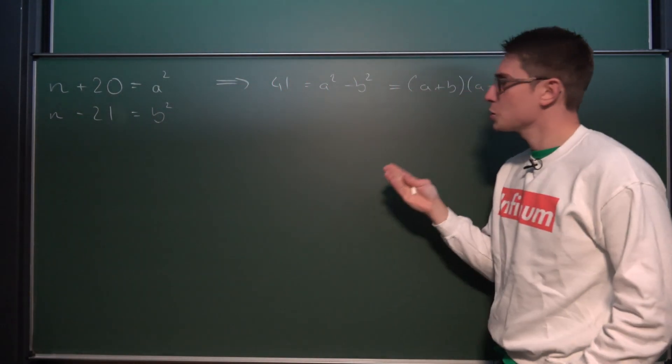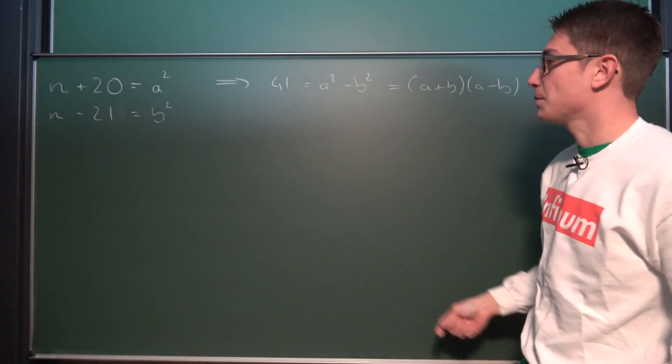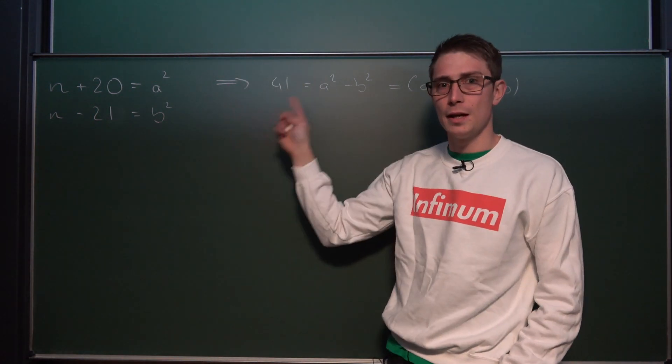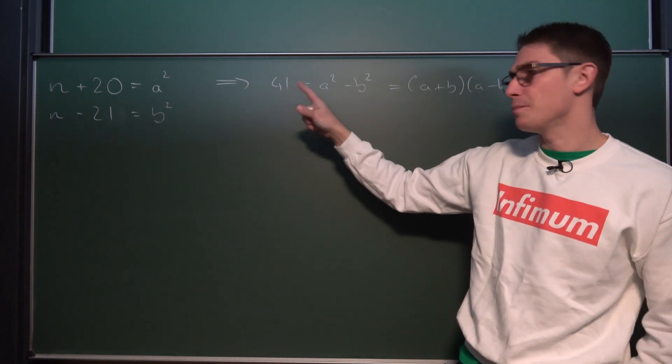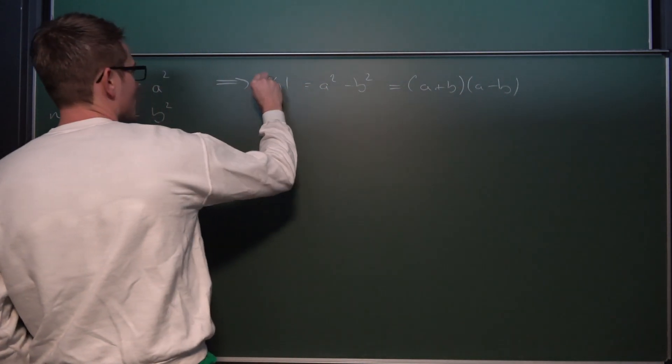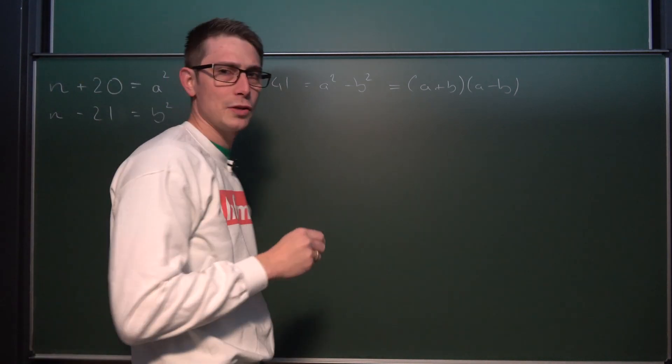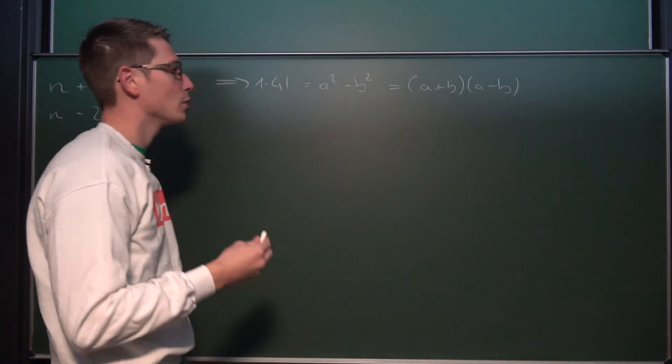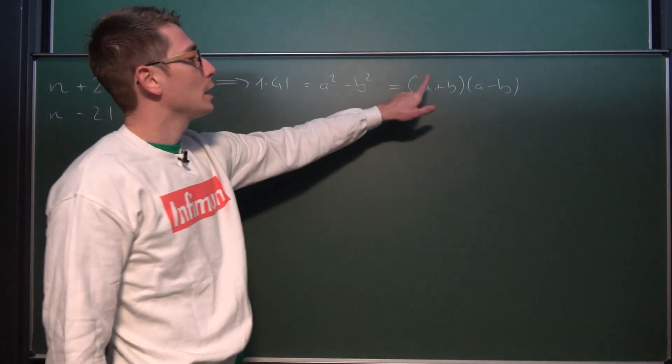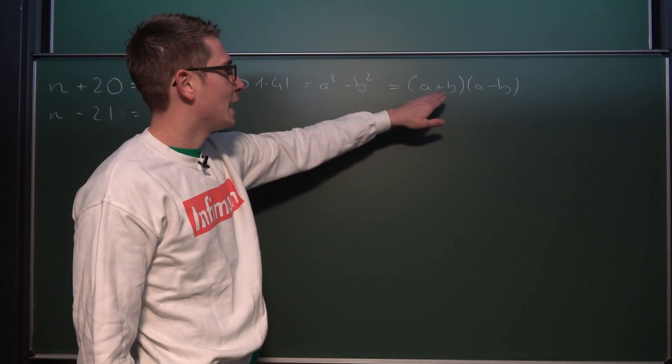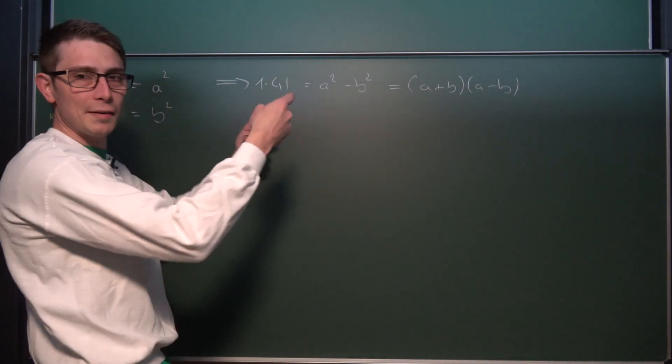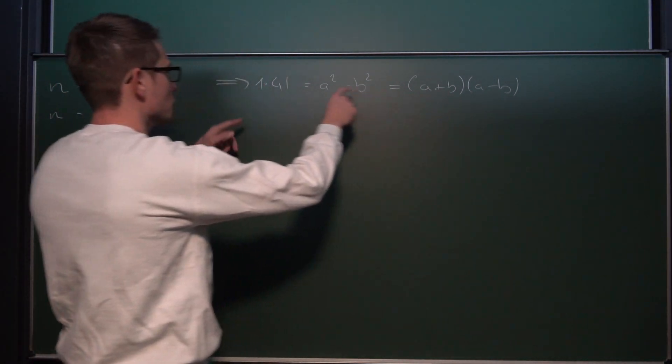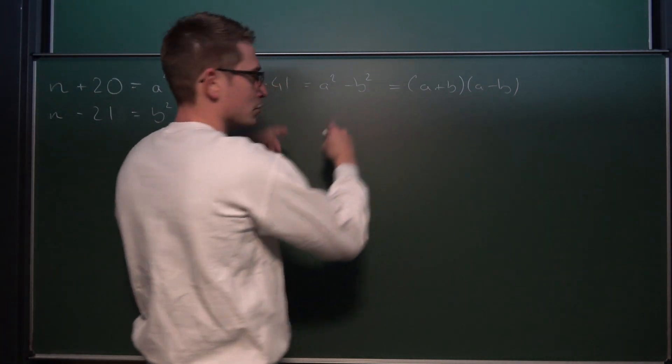There's one approach to go about something like this. Namely, if you consider 41 to be a natural number, then you might also notice that this is a prime number, meaning 41 is the same as 1 times 41. And considering that A and B are also natural numbers, we have that either A plus B equals 1 and A minus B equals 41, or the other way around: A plus B equals 41 and A minus B equals 1.